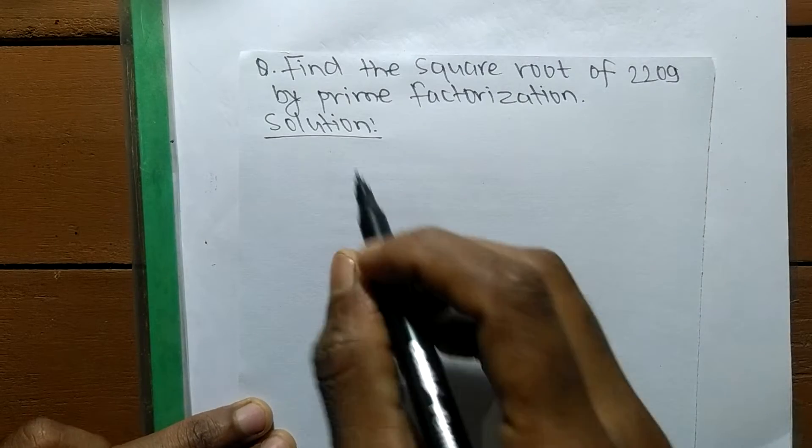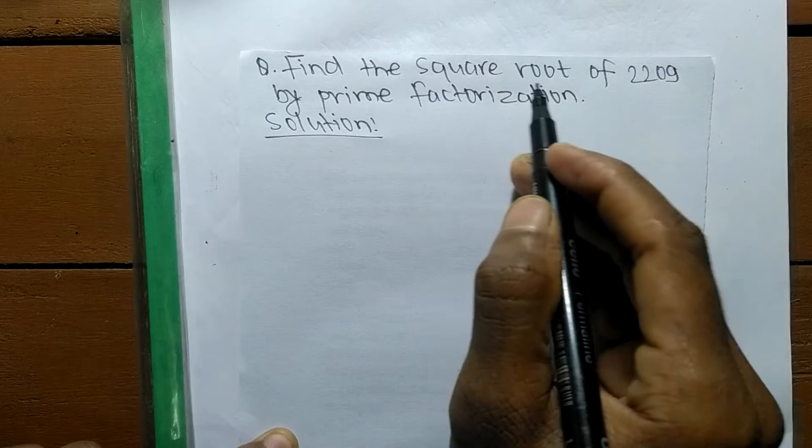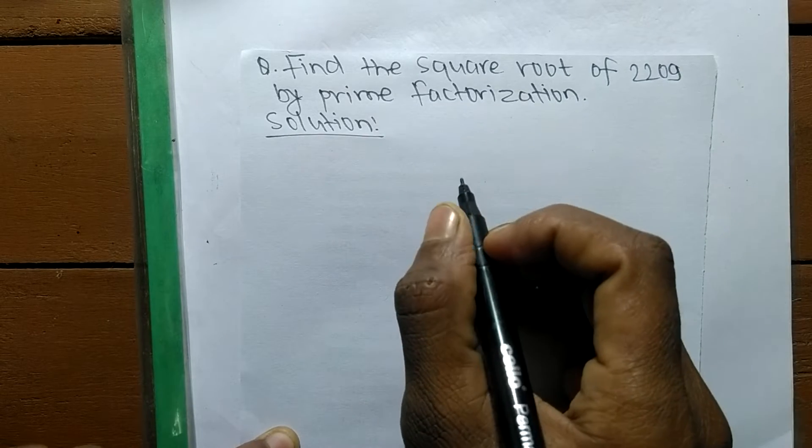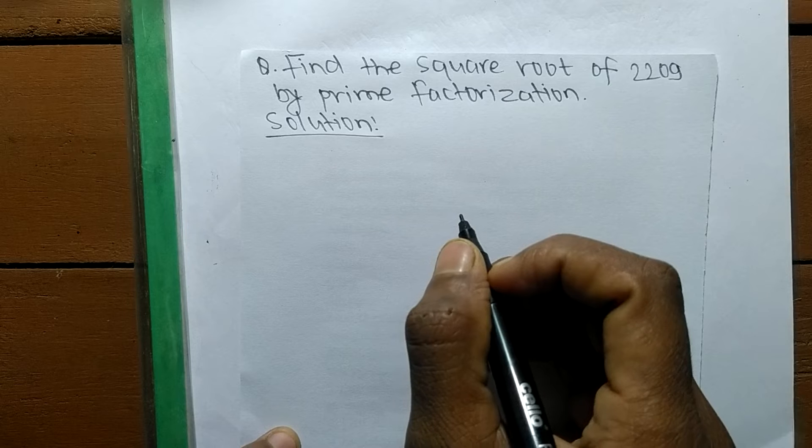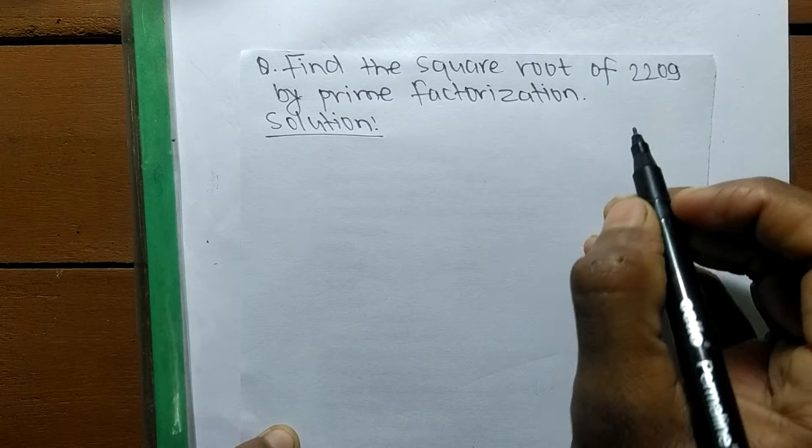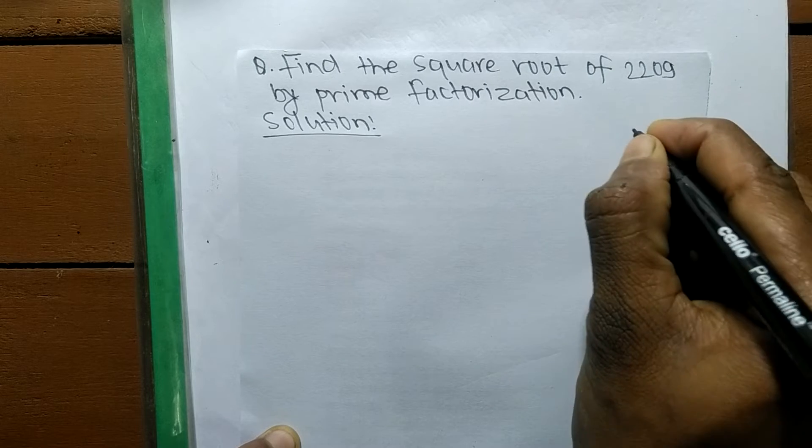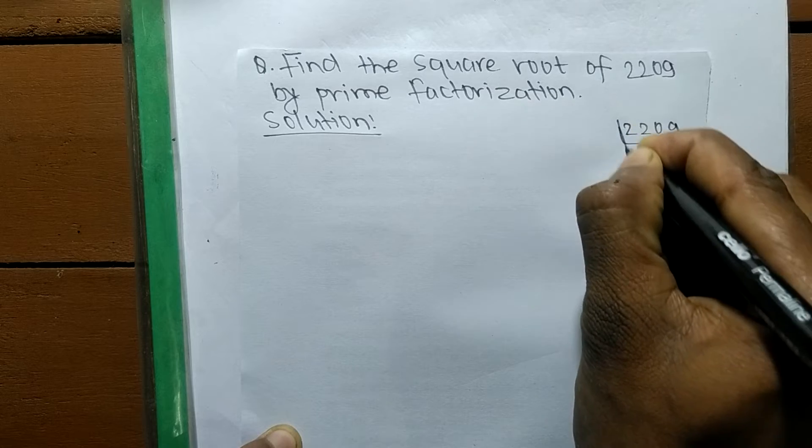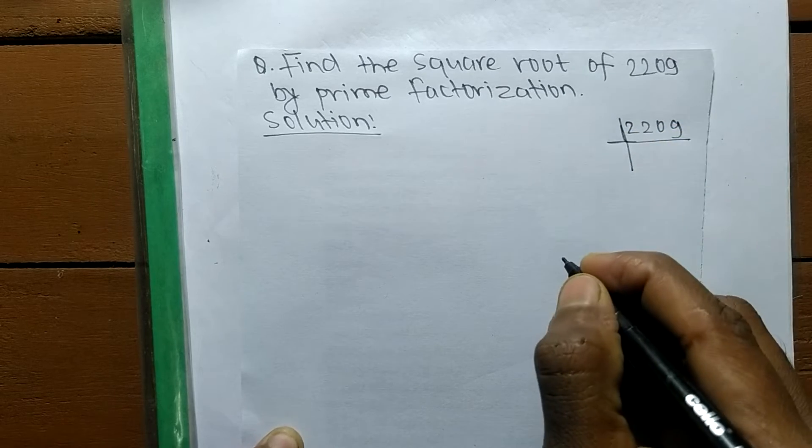Today in this video we shall learn to find the square root of 2209 by prime factorization method. To find the square root by prime factorization, first we have to find the prime factors of the given number. The given number is 2209.